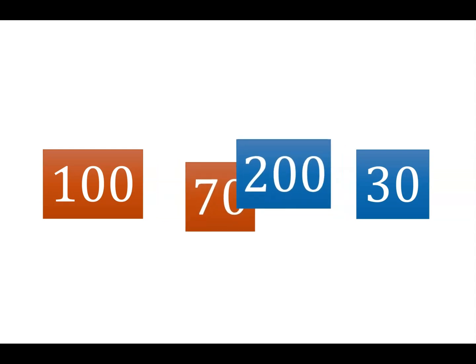Now, since we can add these in any order, you may wish to rearrange your numbers. All that's left is to add the 100 and 200 together to get 300, and the 70 and 30 together to get 100. 300 plus 100 is 400, so our sum is 400.